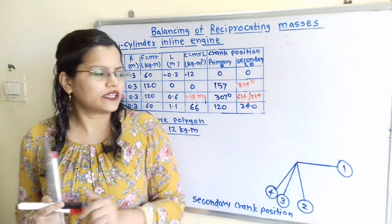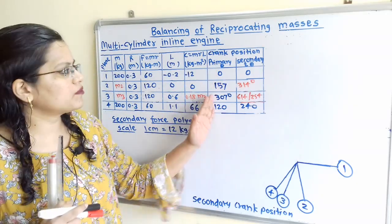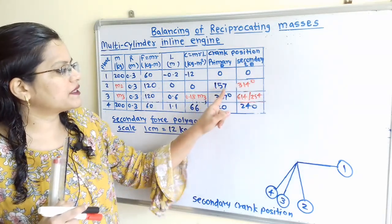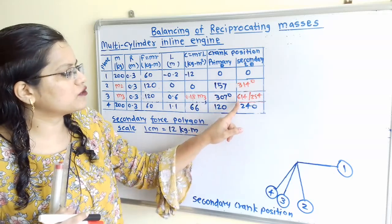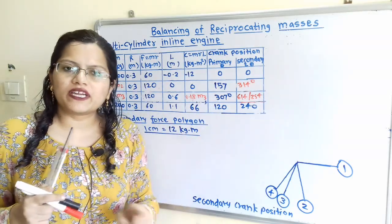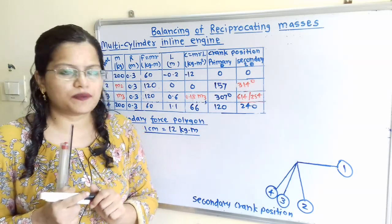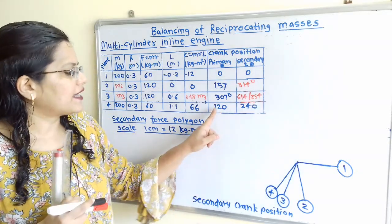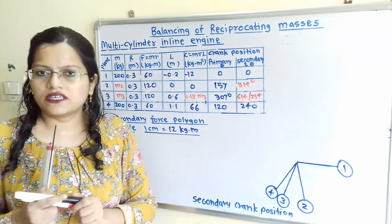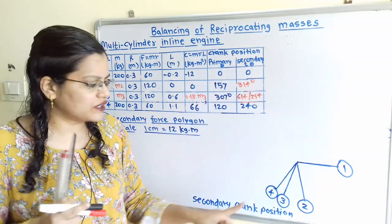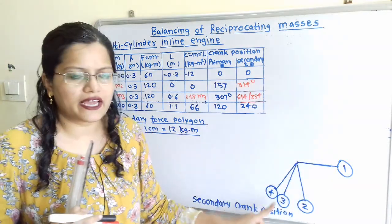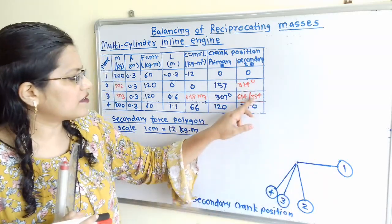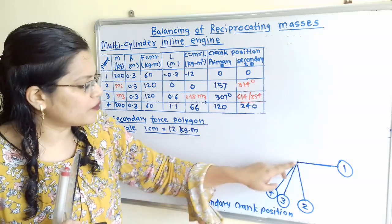All primary crank positions are now known. The secondary crank positions are obtained by multiplying by 2: plane 1 gives 0°, plane 2 gives 157 × 2 = 314°, plane 3 gives 307 × 2 = 614° − 360° = 254°, and plane 4 gives 120 × 2 = 240°. According to these secondary crank positions, we will plot the secondary crank position diagram with planes at 0°, 314°, 254°, and 240°.